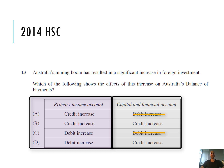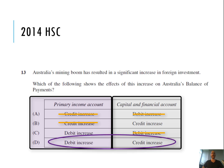Looking at the primary income account: if foreigners invest in Australia, they want a return. So if the capital inflow is a credit, the reward for that investment — whether profit, dividends, or interest — is going to be an outflow from Australia, recorded as a debit. Capital inflow equals a credit increase on the capital and financial account; capital inflow leads to a debit increase on primary income. The answer is D.